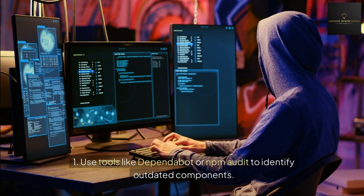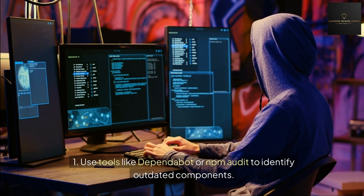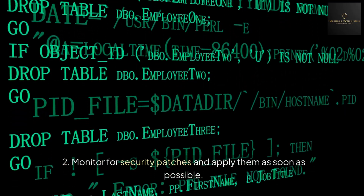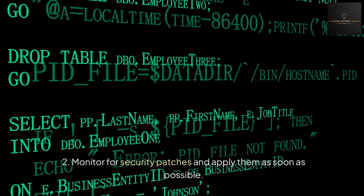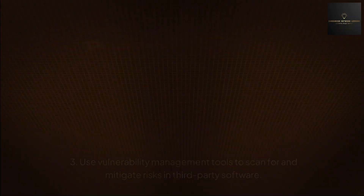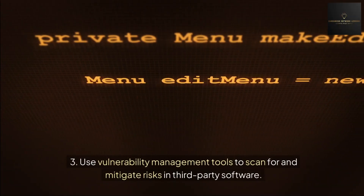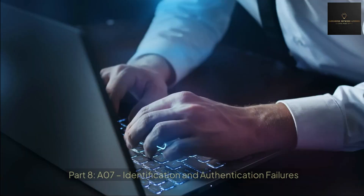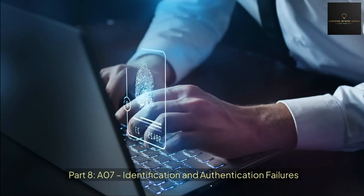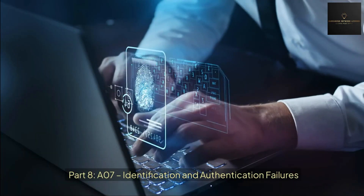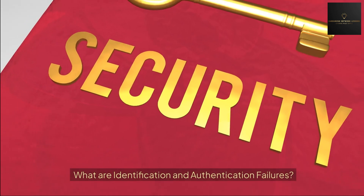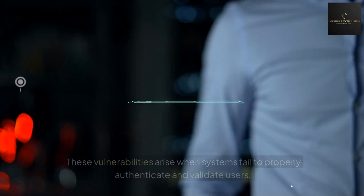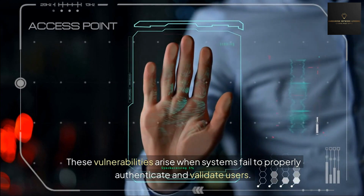How to prevent it: First, keep all dependencies and libraries up to date. Use tools like Dependabot or npm audit to identify outdated components. Second, monitor for security patches and apply them as soon as possible. Third, use vulnerability management tools to scan for and mitigate risks in third-party software.